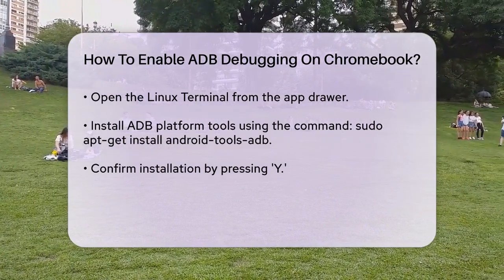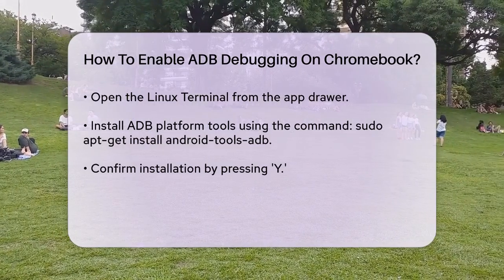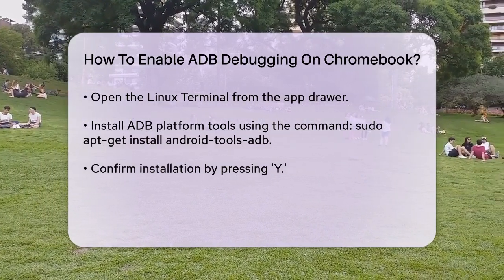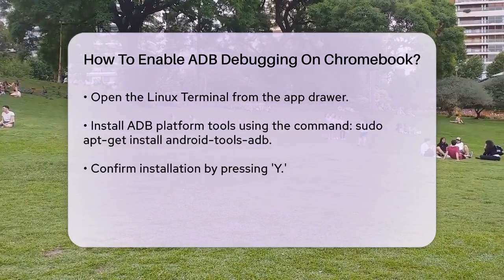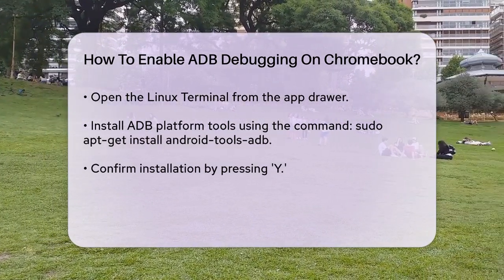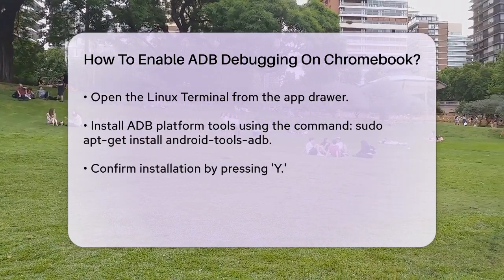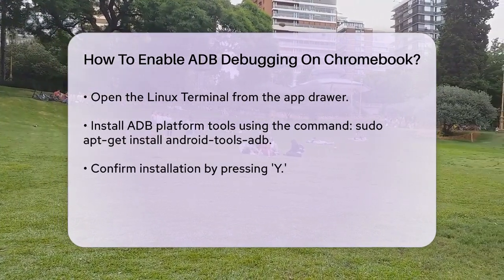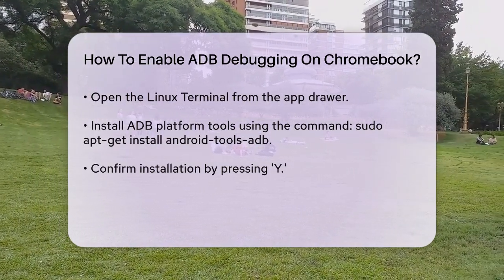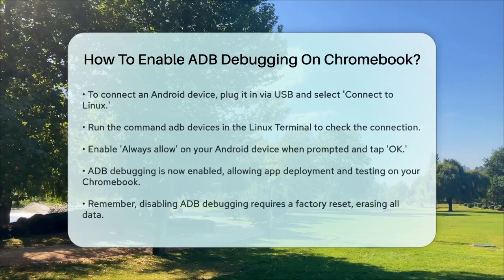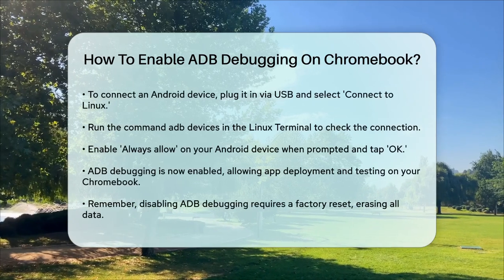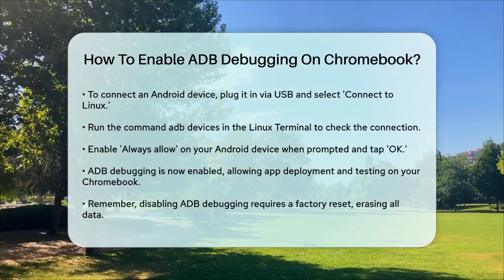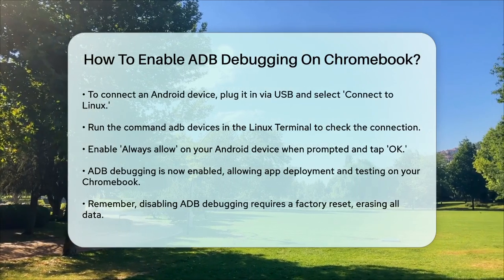If you want to connect your Android device to your Chromebook for debugging, plug it in via USB and select Connect to Linux when prompted. Then, in the Linux terminal, run the command adb devices. On your Android device, you'll see a prompt. Enable the checkbox for Always Allow and tap OK.